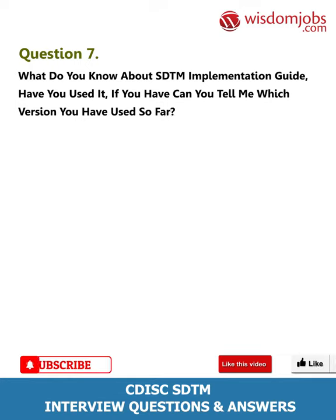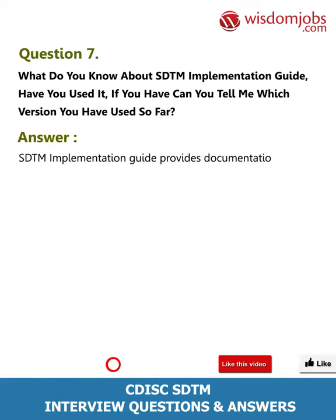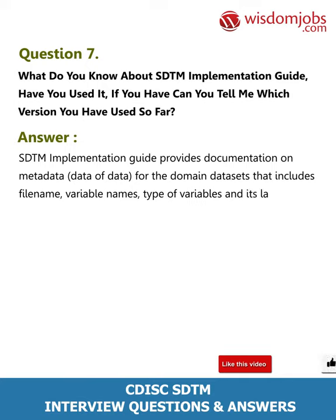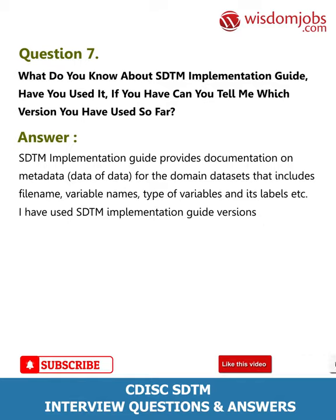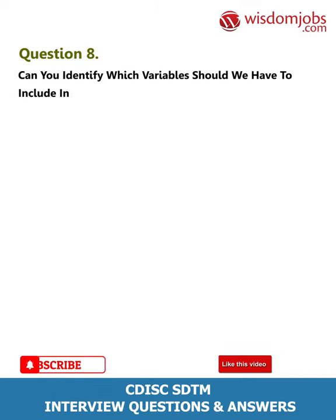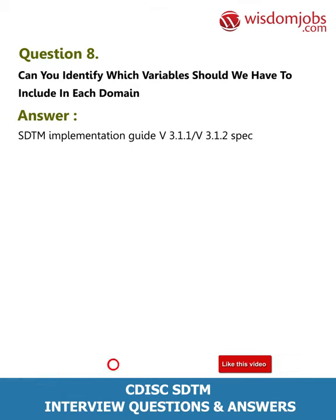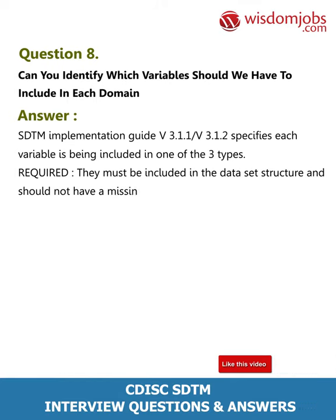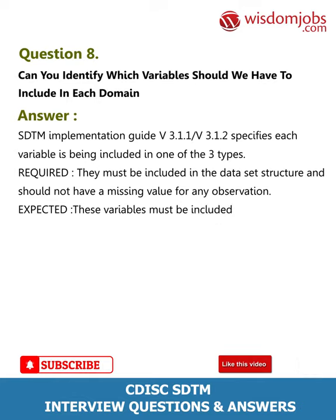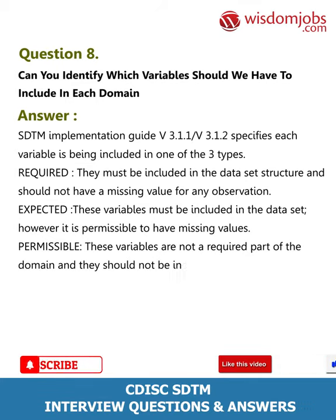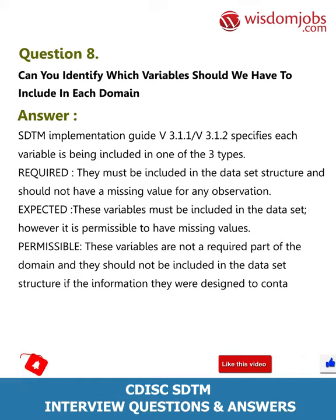Question 7: What do you know about the SDTM Implementation Guide? Answer: The SDTM Implementation Guide provides documentation on metadata for domain data sets, including file name, variable names, type of variables, and labels. I have used SDTM Implementation Guide versions 3.1.1 and 3.1.2. Question 8: Which variables should be included in each domain? Answer: The SDTM Implementation Guide specifies three types of variables: Required — must be included in the data set structure and should not have missing values; Expected — must be included but missing values are permissible; and Permissible — not required and should not be included if the information was not collected.